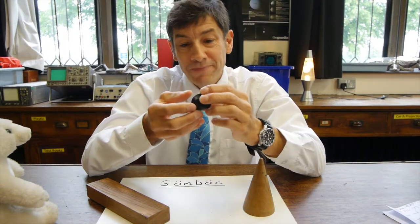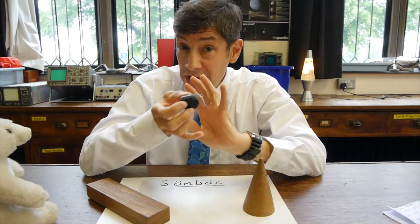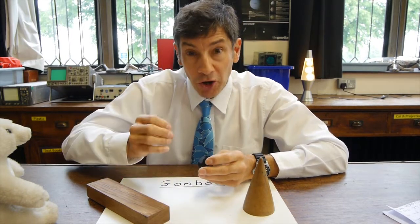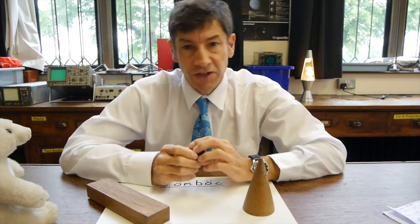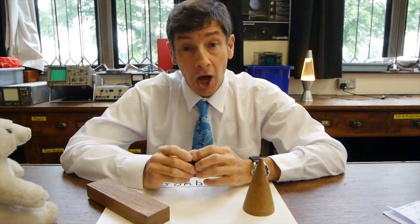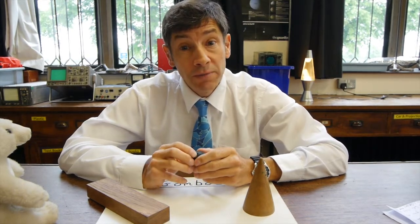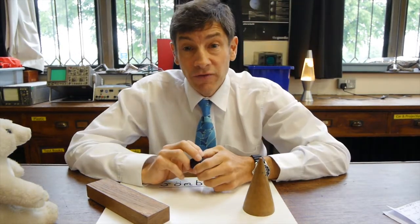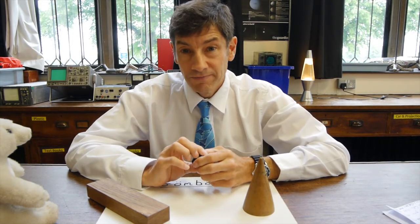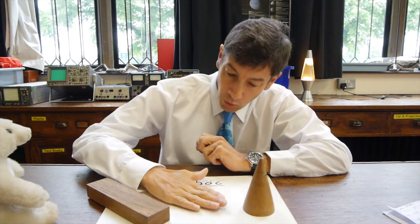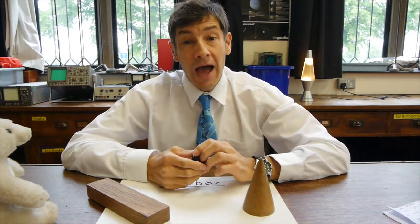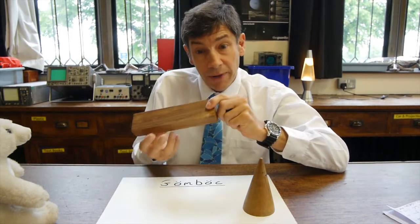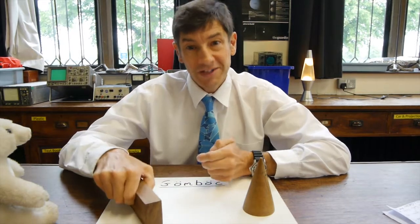So there we go — that's the gömböc. I hope you feel you've got a reasonable understanding of this extremely strange object. One of the things I hope you'll do is go out and try to find something that is mono-monostatic. One of the first objects you'll probably go for will be something like a pencil — you could theoretically balance it upright on the tip of your finger as an unstable equilibrium point, but when it falls onto the desk it can fall in many orientations, and if it has a flat end on the non-sharp side it has at least two if not more stable equilibrium points.